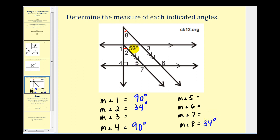And then notice that this angle here marked fifty-six degrees and angle three are corresponding angles. Therefore they're congruent. So angle three measures fifty-six degrees.